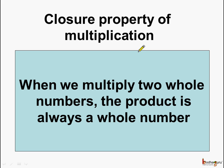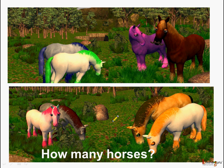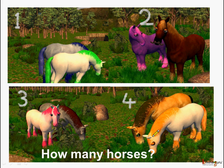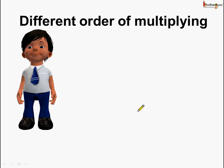Now let us count how many horses are here. 1 pair, 2 pairs, 3 pairs and 4 pairs. So in total how many horses are here? Aman calculated it this way.